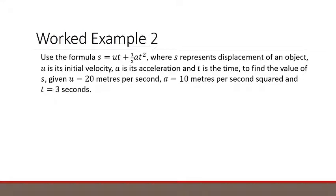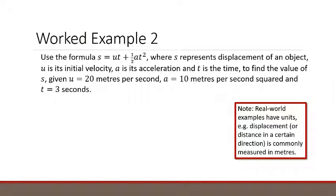Let's have a look at worked example 2 and take it to the real world. Use the formula s = ut + ½at², where s represents displacement of an object. Displacement is simply distance in a certain direction. U is its initial velocity, a is its acceleration, and t is the time. To find the value of s, given u=20 metres per second, a=10 metres per second squared, and t=3 seconds. In the real world examples that we have here, they have units. Displacement is measured in metres, velocity in metres per second, acceleration in metres per second squared, and time in seconds.